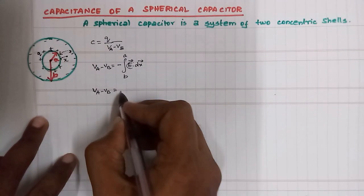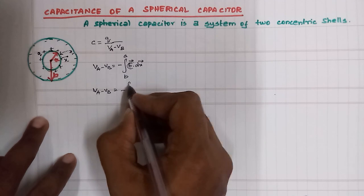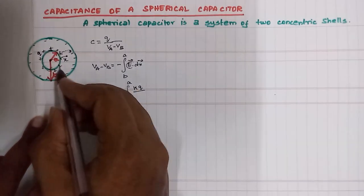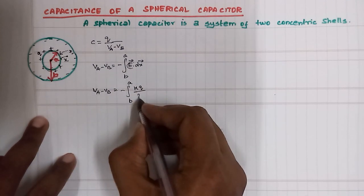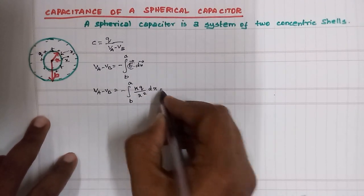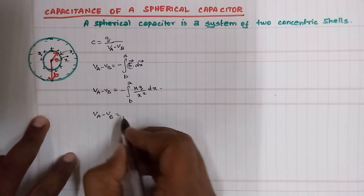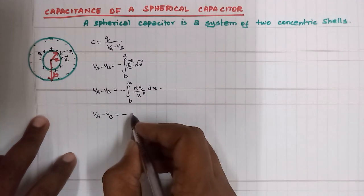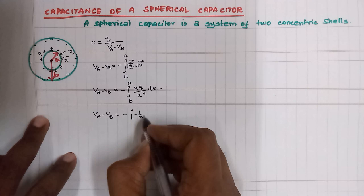Va minus Vb equals minus the integral with limit b to a. E is kq over x squared, into dx. This charge is q, this distance is x squared into dx. If you integrate this further, Va minus Vb equals minus the integral, and integrating kq/x² gives minus 1 by x.